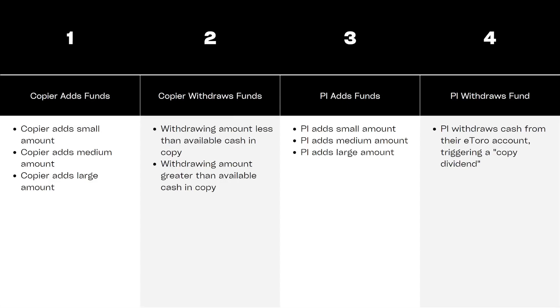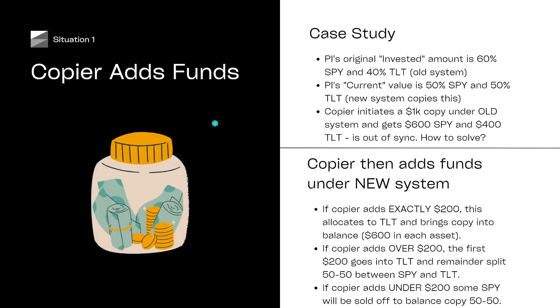So let's start with one of the most common scenarios, which is the copier adding funds into the copy — say they're doing a monthly or quarterly DCA. I'm going to use a case study to make this a bit easier to visualize. In this example, the PI originally invested 60% in SPY and 40% in TLT. Under the old system, this is the percentage you would be getting if you copied. But under the new system, you would get the PI's current value. In this situation their values have drifted and they've now got 50-50, so the new system would give you 50-50 rather than 60-40.